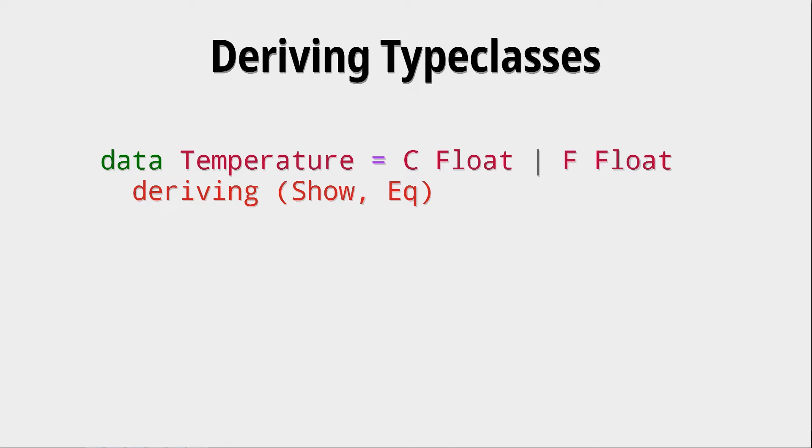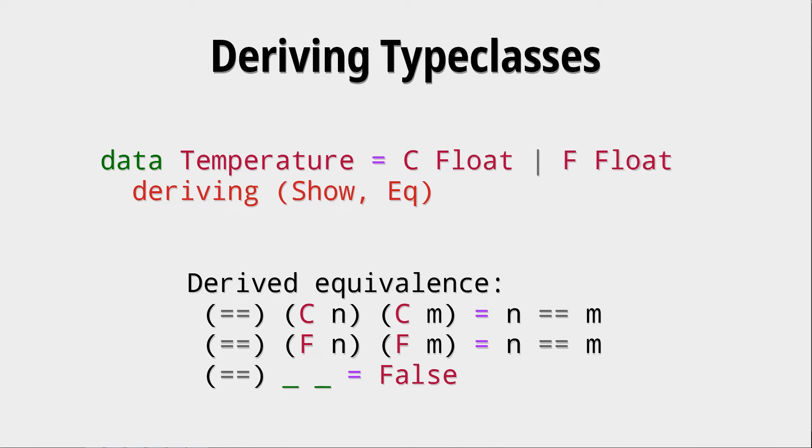Now, with the Eq, this is a bit different because we've just seen how to correctly define the equivalence for this temperature type. The question is, how does this deriving Eq actually derive the equivalence? Well, it doesn't do it correctly. The derived equivalence does the following. It compares if the constructors are the same. And if they are, it compares whether all the arguments for the constructors are the same. This is structural equivalence because it looks at the structure of the data type and checks if both are the same.